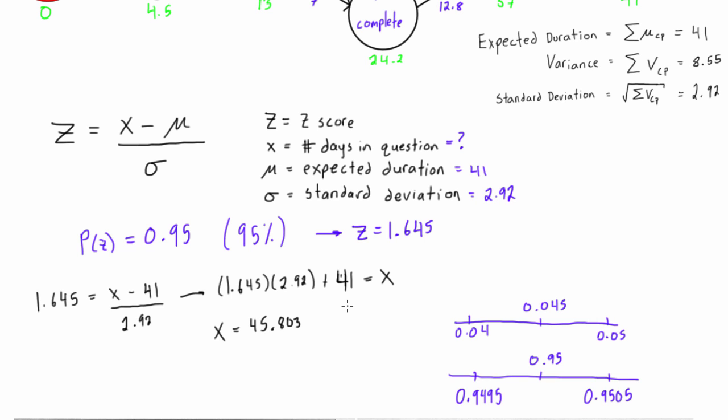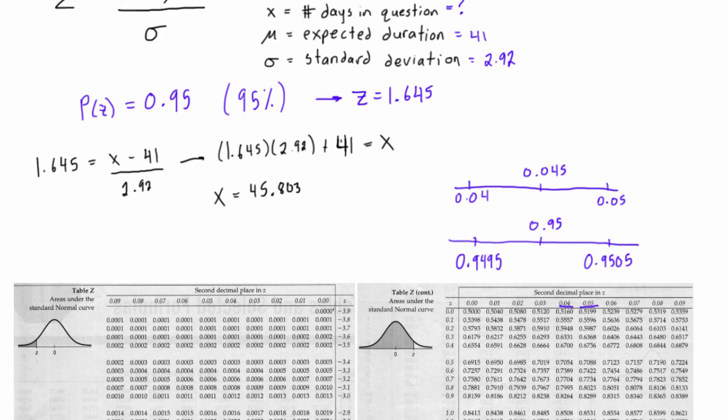So the original question was what is the estimated project completion date with at least a 95% confidence level? Well, it's 45.803 days or more, and the reason that we say or more at the end...